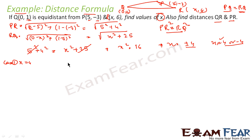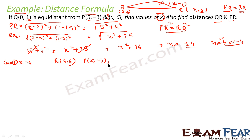In Case 1, x = 4, so the point R is (4,6). P is given as (5,-3) and Q is (0,1). We now need to find QR — the distance between Q(0,1) and R(4,6).